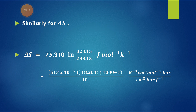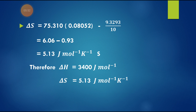Next, for delta S: substituting all numerical values into the delta S equation gives 75.310 · ln(323.15/298.15) minus 513 × 10⁻⁶ × 18.204 × (1000 minus 1), again dividing by 10 for unit conversion. Finally, delta S equals 6.06 minus 0.93, which equals 5.13 J/mol·K. So the answers are delta H equal to 3400 J/mol and delta S equal to 5.13 J/mol·K.